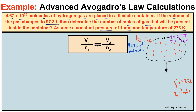Avogadro's law states that if the temperature and pressure of a gas are held constant, then the volume and number of moles of that gas are going to be directly proportional. So what we're asked to figure out is the number of moles of gas that are going to occupy this container if it's occupying a space of 97.3 liters.